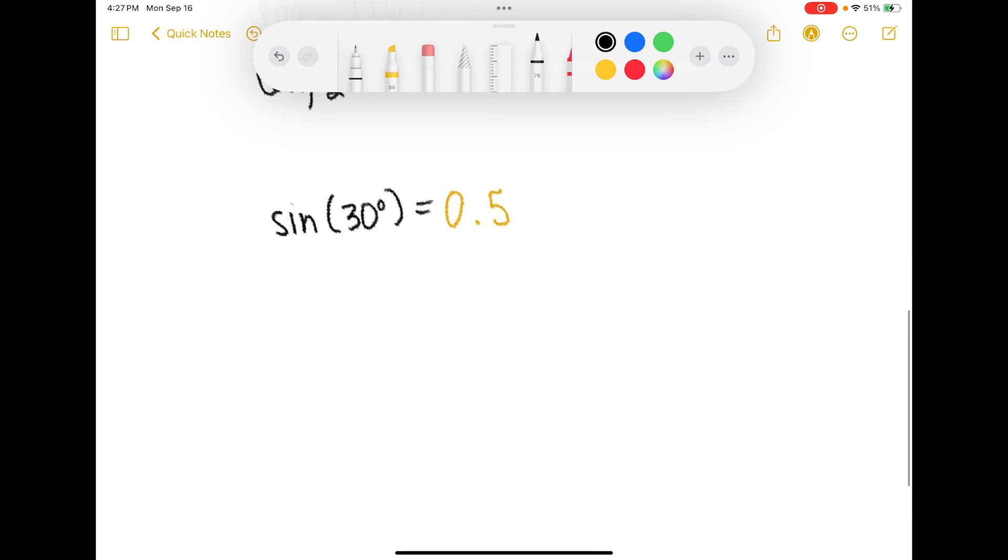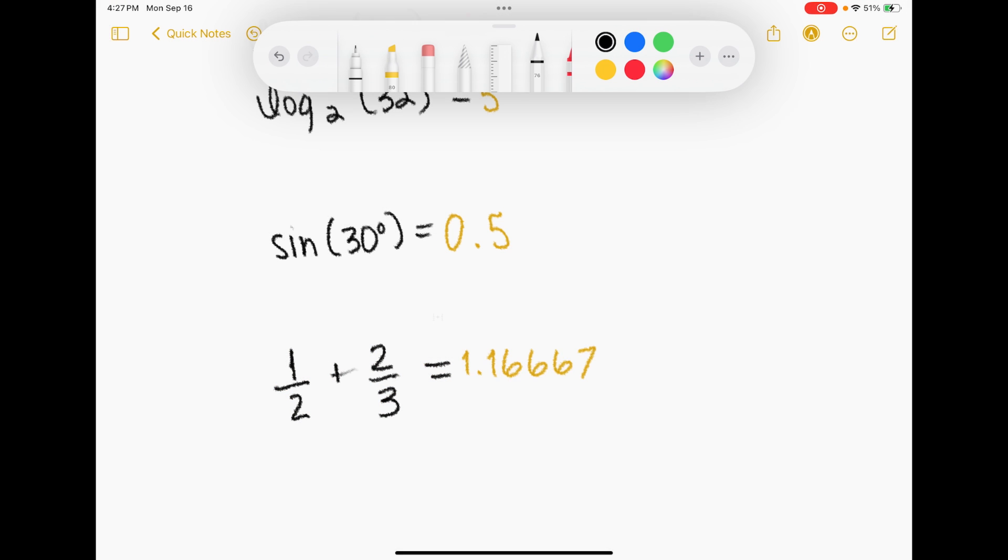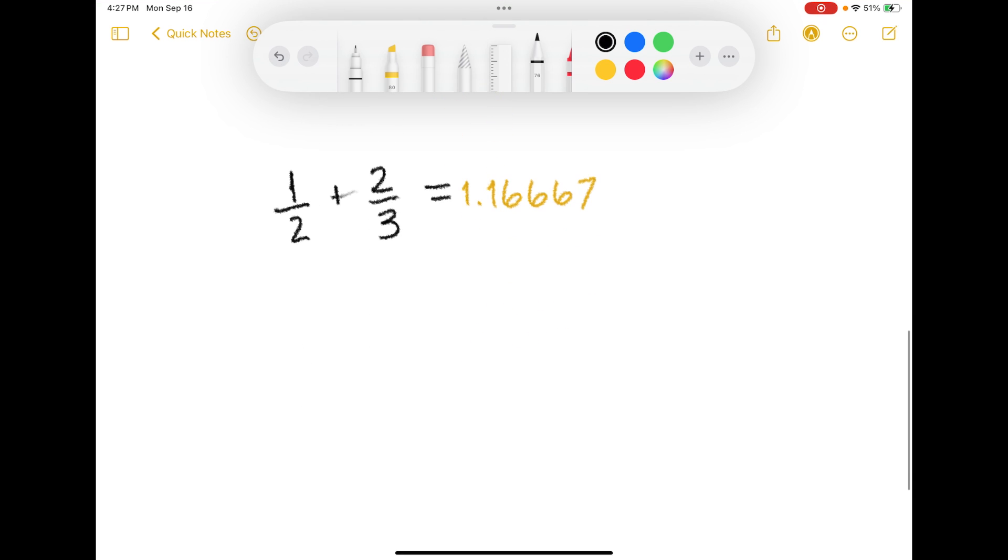So then it got me thinking about fractions. Could it do fractions? So I wrote one half plus two thirds and it will give me a calculation there but it's not going to write it in exact form. It's going to round just like a calculator would. So it doesn't do fractions in that way. I mean it can treat them like numbers and come up with a decimal but it doesn't do fractions in that way.